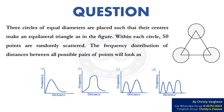In this video let us discuss a question on frequency distribution graphs. Three circles of equal diameters are placed such that their centers make an equilateral triangle, as in the figure. Within each circle 50 points are randomly scattered. The frequency distribution of distances between all possible pairs of points will look as A, B, C, or D.